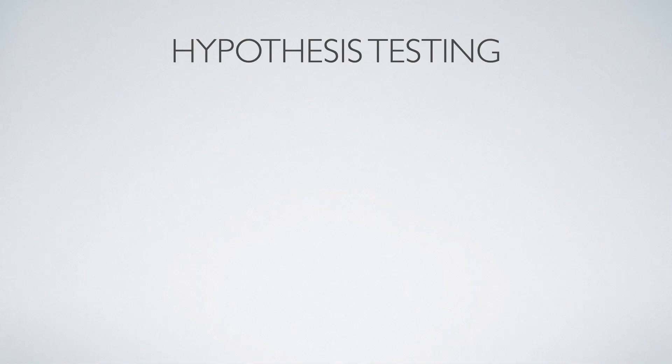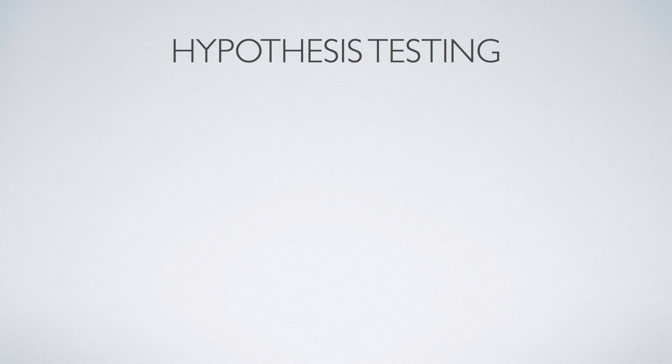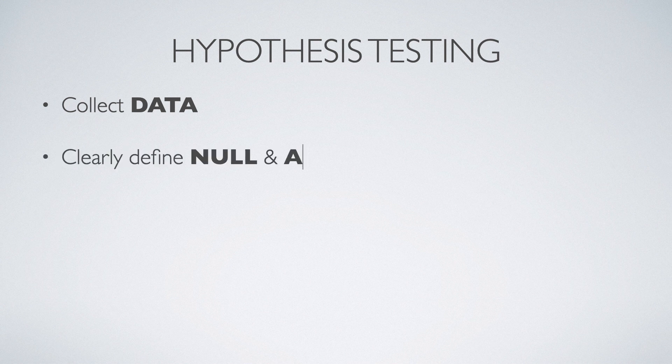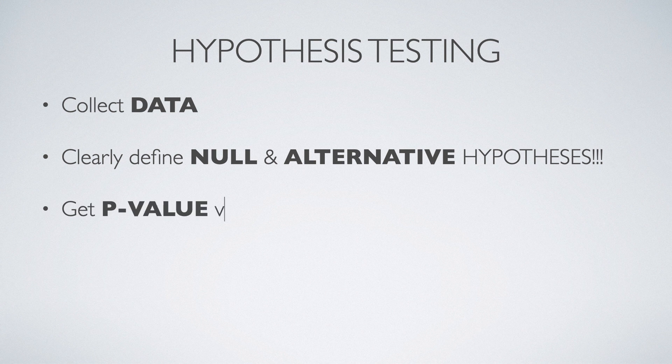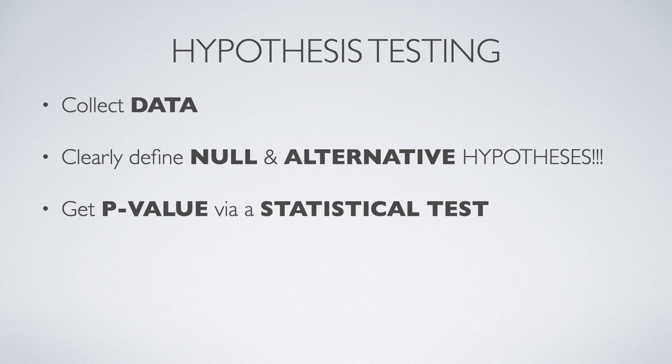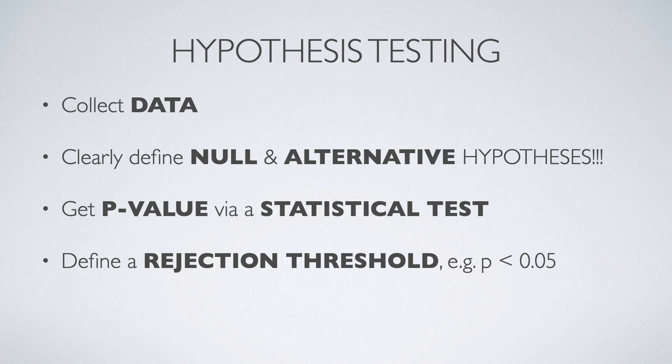Hypothesis testing can be summarized in only five points. You first collect data. Then you clearly define null and alternative hypotheses. That's the most important point. Then you get a p-value through something called a statistical test. Every modern software will calculate it for you. You define your rejection threshold, for example, p-value of under 0.05. And finally,